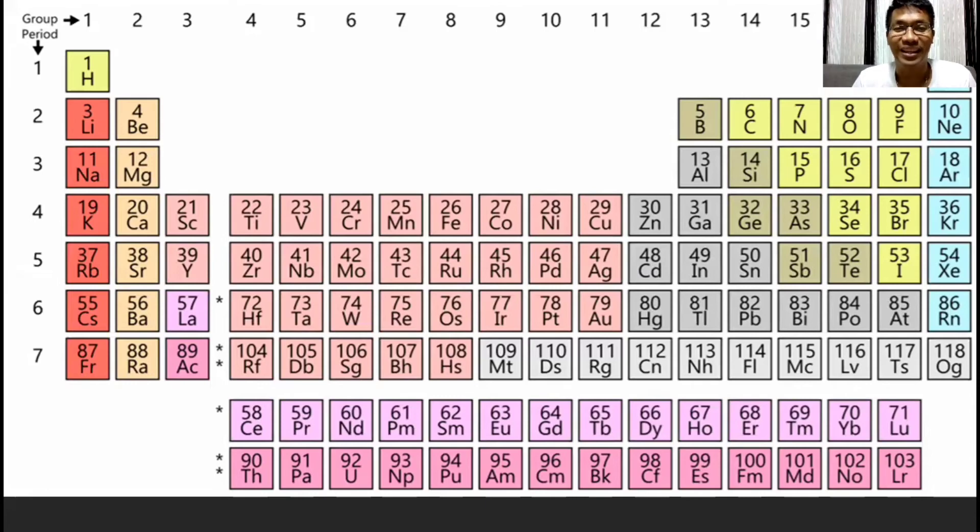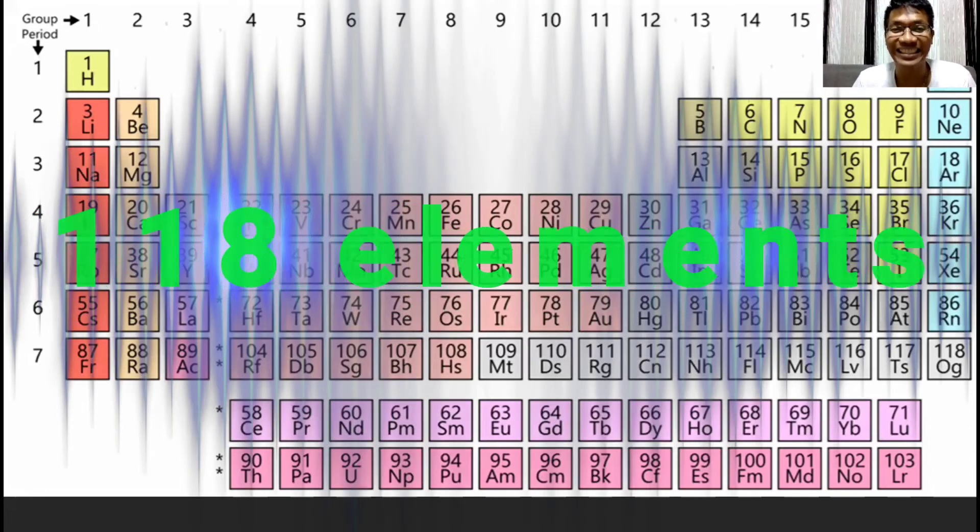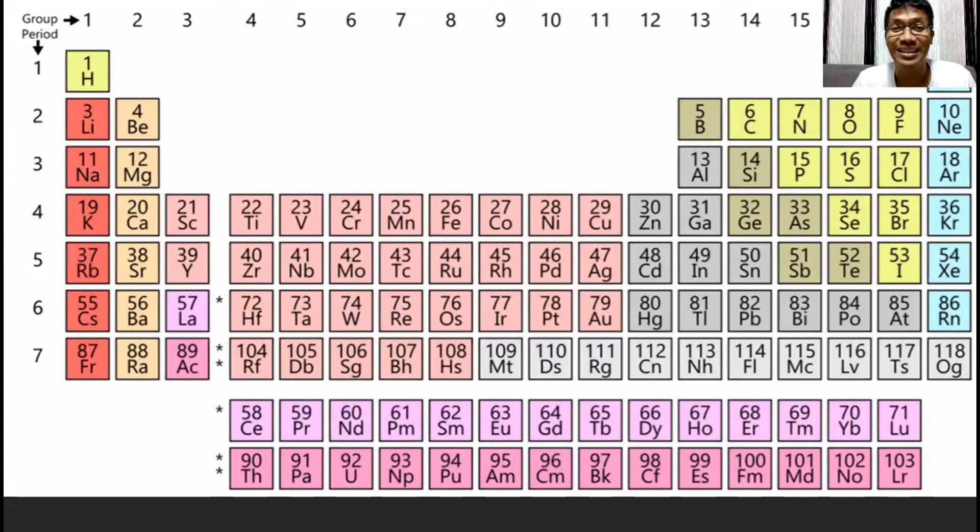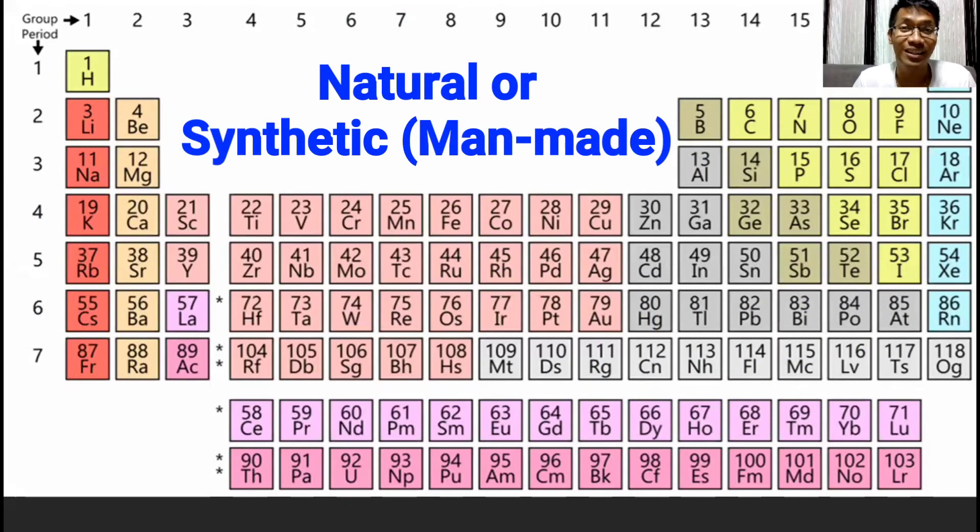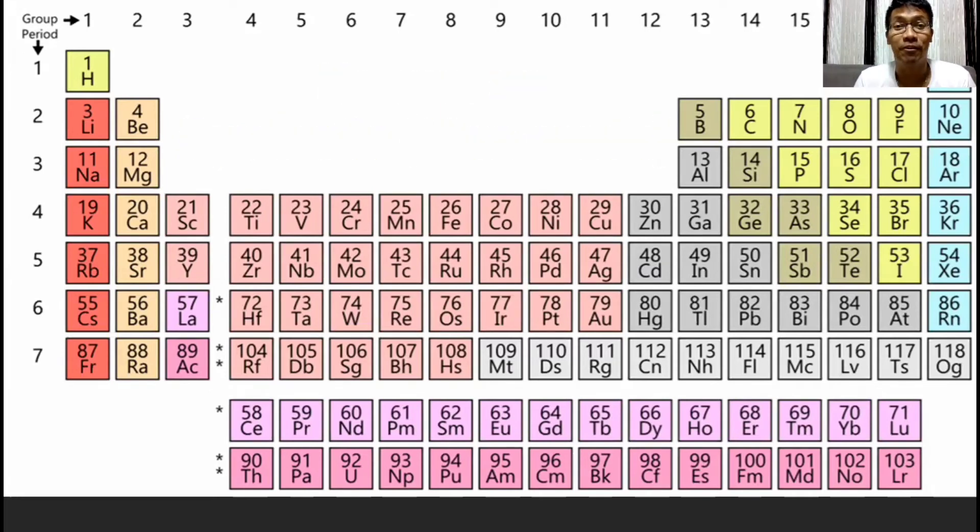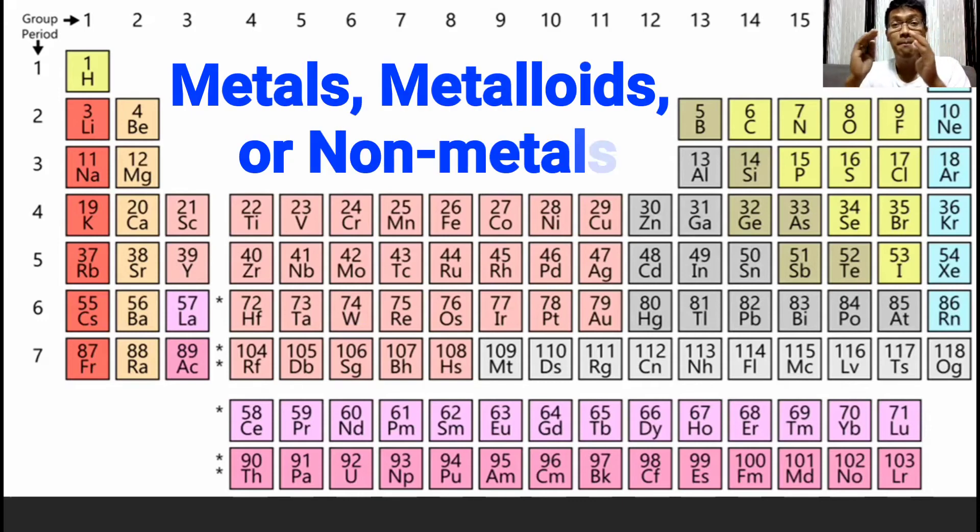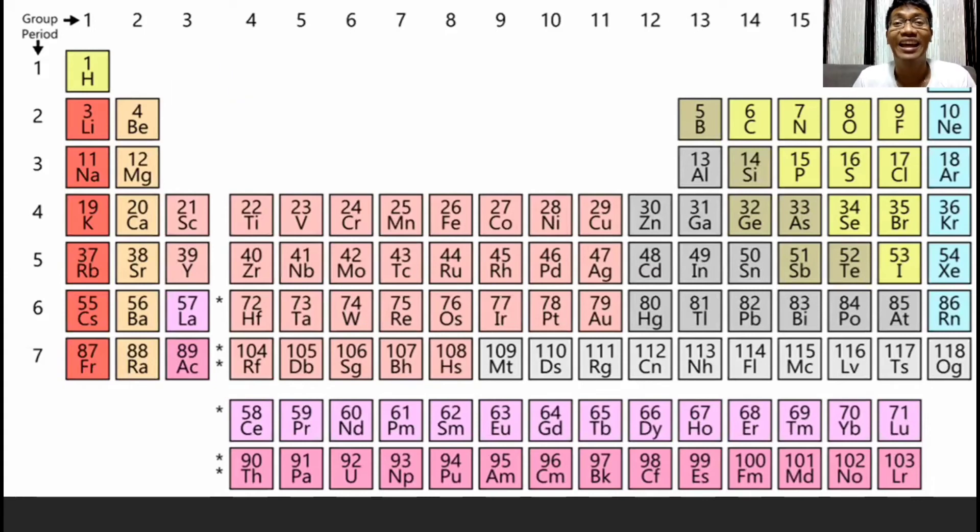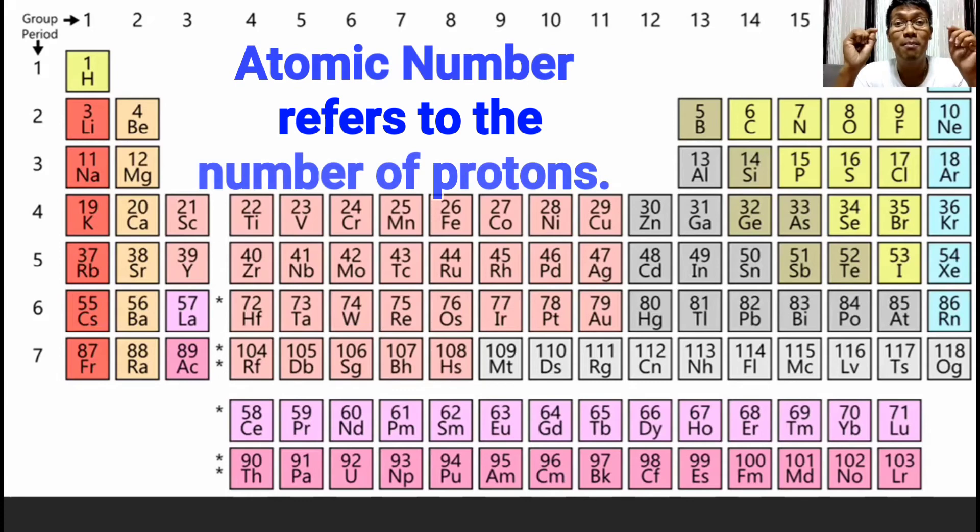As of today, we got 118 elements. Elements can be natural or synthetic. Elements can be further classified as metal, metalloid, and non-metal. And every element has a unique number of protons, and this is what we call atomic number.